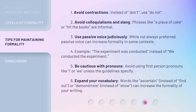Third, use passive voice judiciously — while not always preferred, passive voice can increase formality in some contexts. For example: "The experiment was conducted" instead of "We conducted the experiment." Fourth, be cautious with pronouns — avoid using first-person pronouns like "I" or "we" unless the guidelines specify. Fifth, expand your vocabulary — words like "ascertain" instead of "find out," or "demonstrate" instead of "show," can increase the formality of your writing.